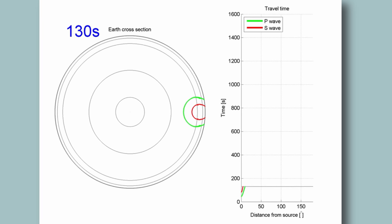Here you can see that the green P wave beats the red S wave from an earthquake focus. And the further they move through the Earth, the more the P wave separates from the S wave.